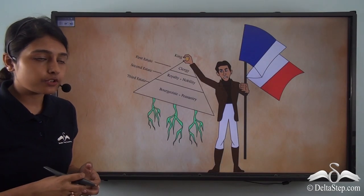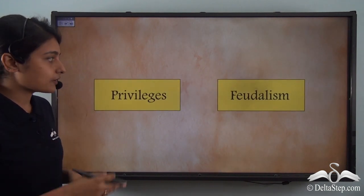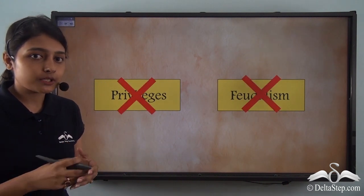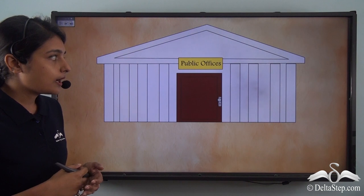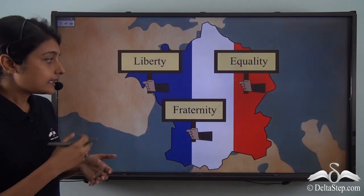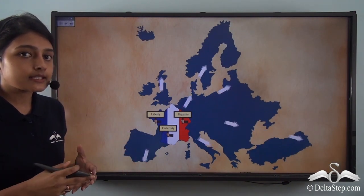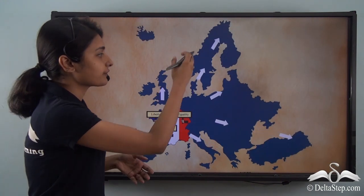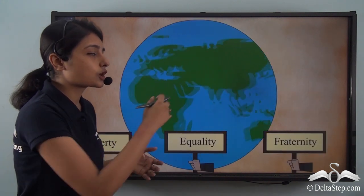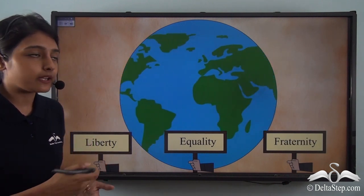With the end of the French Revolution came the end of the estate system. The concepts of privileges and feudalism on which the estate system was established were now abolished, and public offices were made open to all. The ideas of liberty, equality and fraternity now spread to different parts of Europe and all across the globe, inspiring subsequent revolutions for independence.